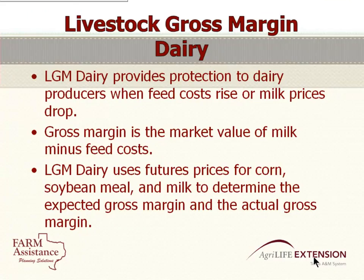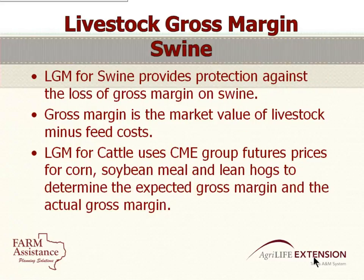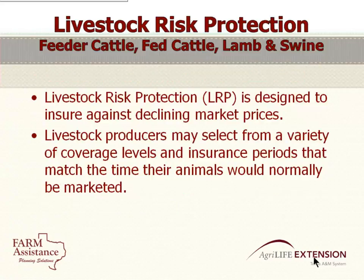On Livestock Gross Margin — it's available for dairy, calculated as the future price of corn and soybean meal minus milk, using a formula. For cattle it's the cost of feeder cattle and corn versus fat cattle on the other side. For swine it's corn and soybean versus finished hogs — similar to dairy but without feeder pigs. Then LRP again is more about protecting against a price decline. It allows you to essentially buy a put on your cattle for the specific number of pounds you have, as opposed to going to the futures market and buying a lumpy contract.